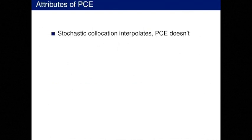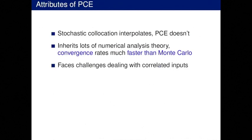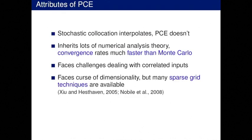Here are some attributes of the polynomial chaos approach. Stochastic collocation interpolates, while polynomial chaos doesn't typically. We inherit a lot of numerical analysis theory on convergence, giving integrals much faster than Monte Carlo. We have some challenges with correlated inputs. We face the curse of dimensionality, which makes the problem appropriate for sparse grid techniques. One thing polynomial chaos does quite naturally, that Gaussian processes struggle with, is that the quantity of interest can be high-dimensional — I can get the whole flow field U at all spatial dimensions and quantify its uncertainty quite naturally.